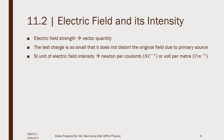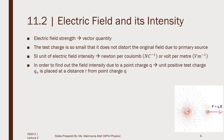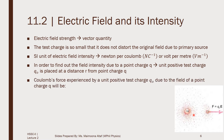In order to find out the field intensity due to a point charge Q, a unit test charge is placed at a distance R from the original charge Q. The Coulomb force experienced by the unit positive test charge due to the field of a point charge will be given by F = kQQ₀/R², where Q is the charge of the source charge, Q₀ is the charge on the unit positive test charge, and R is the distance between these two charges.